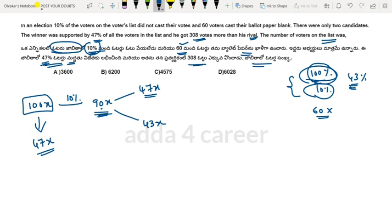So if you look at the remaining 90x, the winner got 47x and the other candidate got 43x.